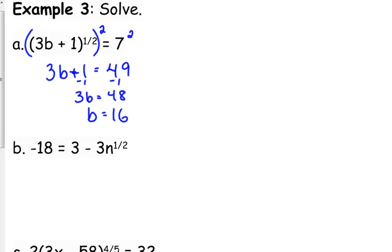What if we've got something like example b, where we have negative 18 equals 3 minus 3n to the one half? Notice the placement of the exponent is different. It's still the one half power, however the only thing that power applies to is that variable n. It's not applied to that entire expression. So we need to isolate that variable first, and then we can deal with the power.